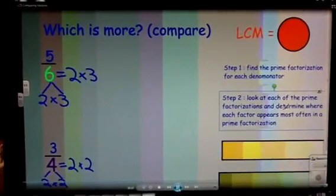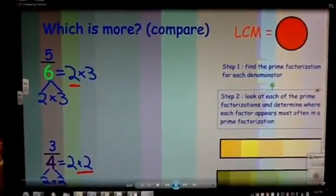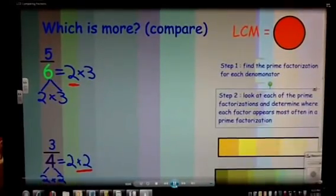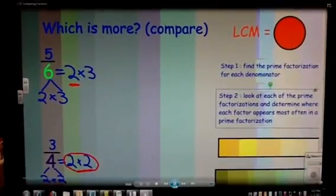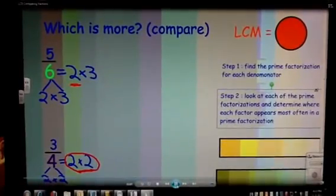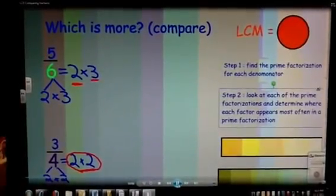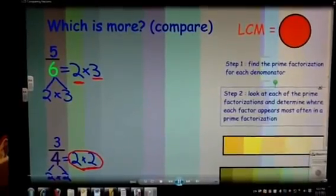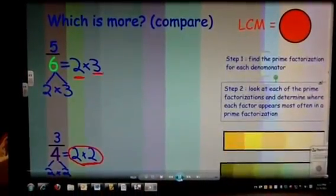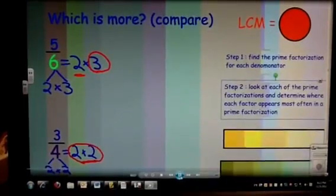So I look at the factor two. There's one in the number six, and there's two in the number four. It appears most often in the four, so I will circle those two twos. I'm going to look at the other factor. There is a three in the prime factorization of six, and there are no other threes. So it appears the most in this one, and I will circle it.